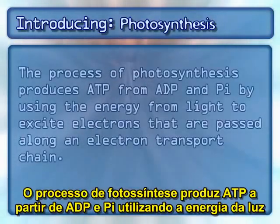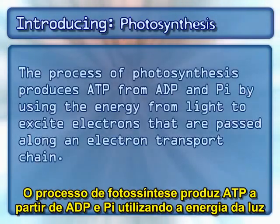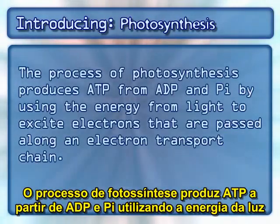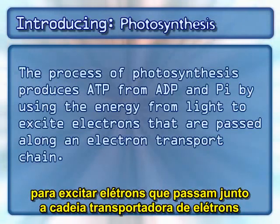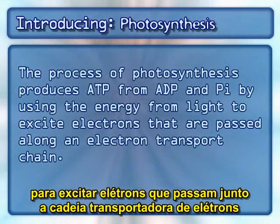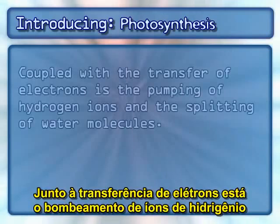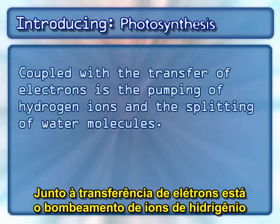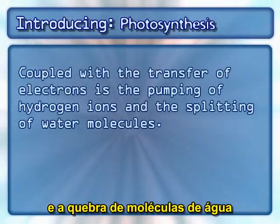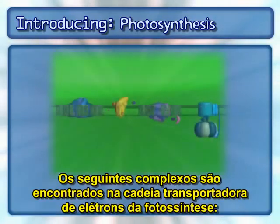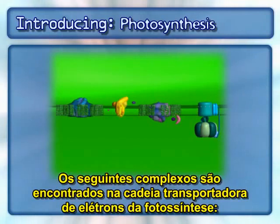The process of photosynthesis produces ATP from ADP and PI by using the energy from light to excite electrons that are passed along an electron transport chain. Coupled with the transfer of electrons is the pumping of hydrogen ions and the splitting of water molecules. The following complexes are found in the photosynthesis electron transport chain.